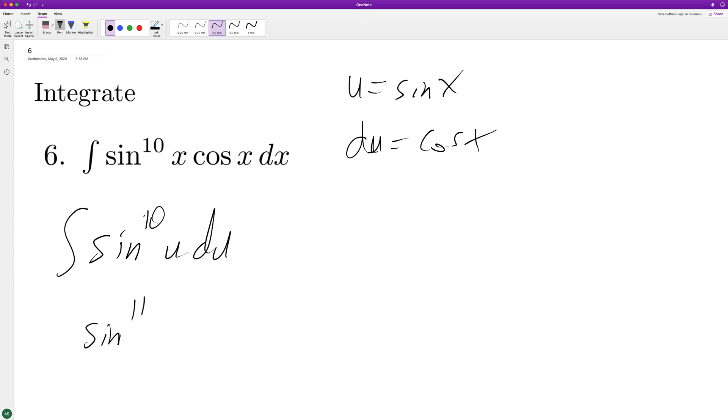So when we integrate this, we get the sine raised to 11 divided by 11 plus C. So we end up with the sine of, substitute back in, it's just going to be x over 11 plus C.